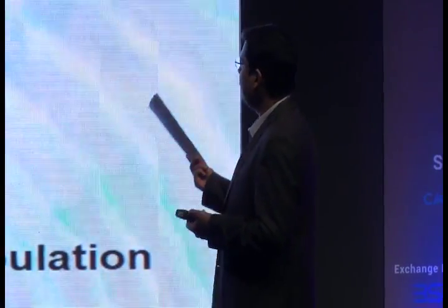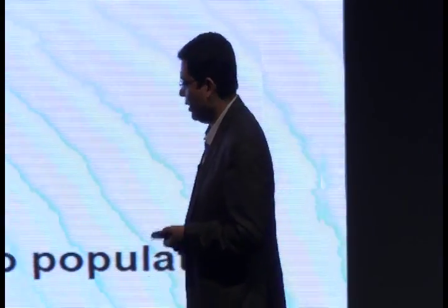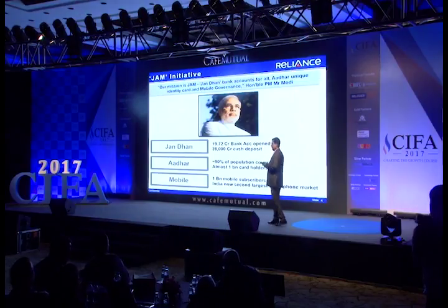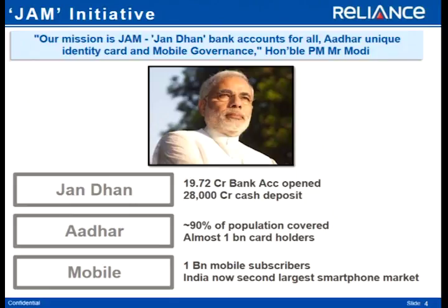These numbers highlight what opportunity we have and where all of us can take the industry. There are 40 crore bank accounts, and out of 40 crores, close to 19 crore bank accounts came through the Jan Dhan initiative by the Prime Minister, which is hardly a year to a year and a half old. Look at the number we have in the form of mutual fund investors — 20 million, hardly 2 crore. This is the Honourable Prime Minister's mission: Jan Dhan, mobile, and Aadhaar.